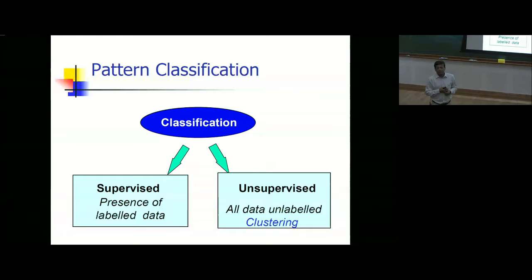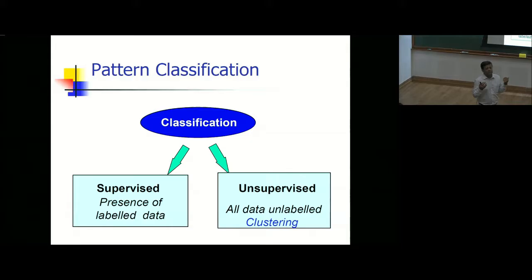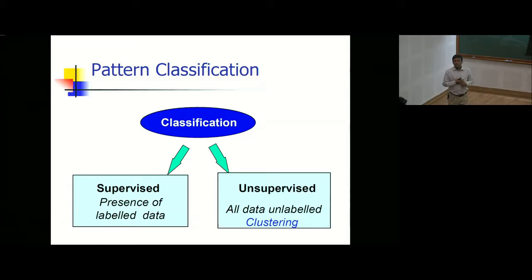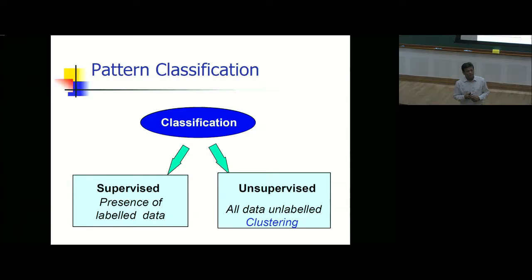The idea is that as soon as you are talking about classification, you can think about pattern recognition or data mining — it's almost the same. In pattern recognition we think that data size is small, whereas in data mining we start with large data to big data, and then your techniques and philosophy change.